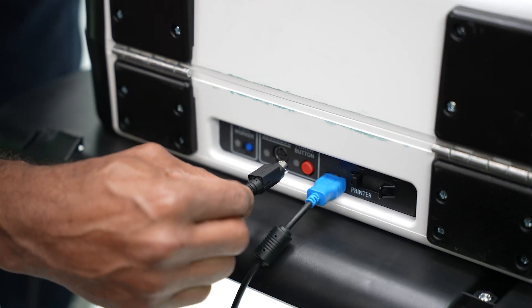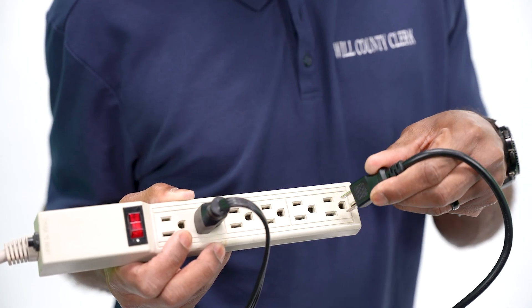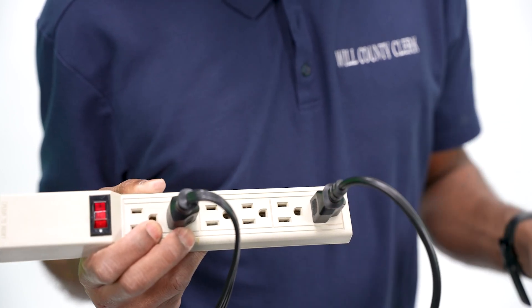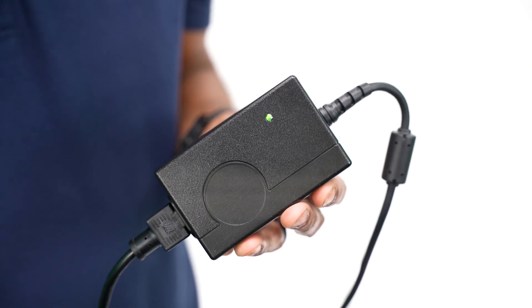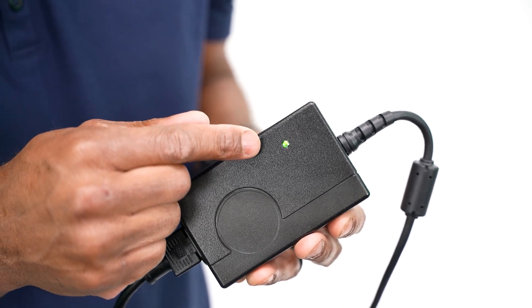Plug the power brick into the back of the touch writer with the flat side up. Plug the power cord into an outlet or power strip. A green light on the power brick will indicate AC power is present. Do not power up the touch writer yet.